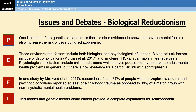A limitation of genetic explanations — and broadly of biological explanations for schizophrenia — is that environmental factors also increase the risk of developing schizophrenia, but are very often ignored by biological explanations. Environmental factors include both biological and psychological influences. Biological risk factors include birth complications and smoking THC-rich cannabis as teenagers. Psychological risk factors include childhood trauma, which leaves people more vulnerable to adult mental health problems, with evidence for a particular link to schizophrenia. This also links with issues and debates, as it can be framed as a biological reductionism point.